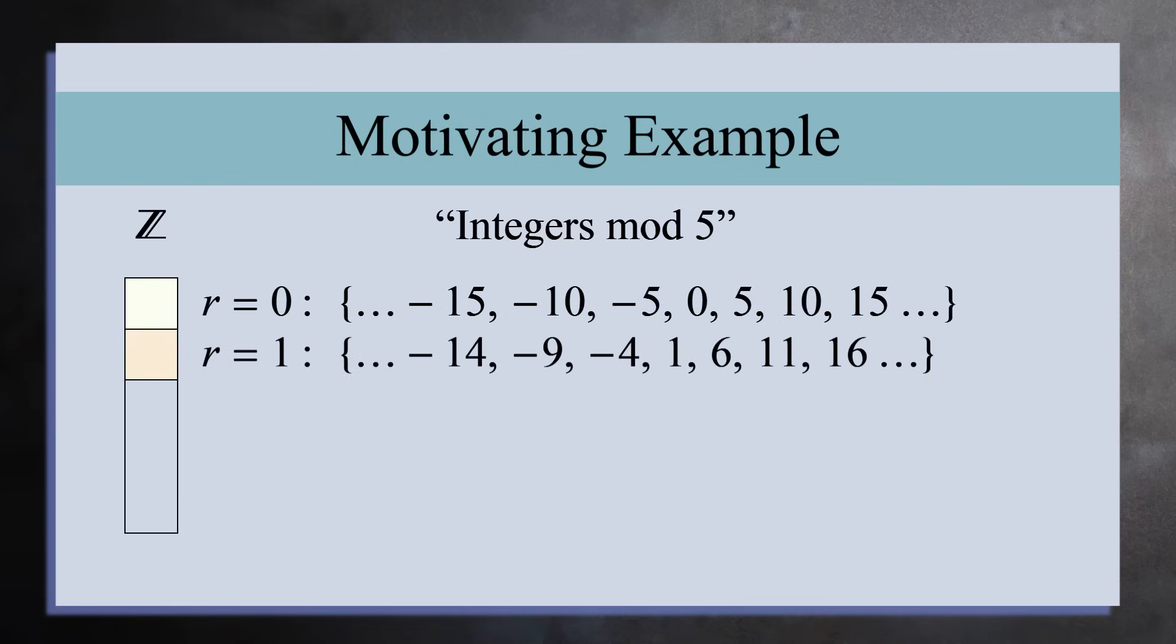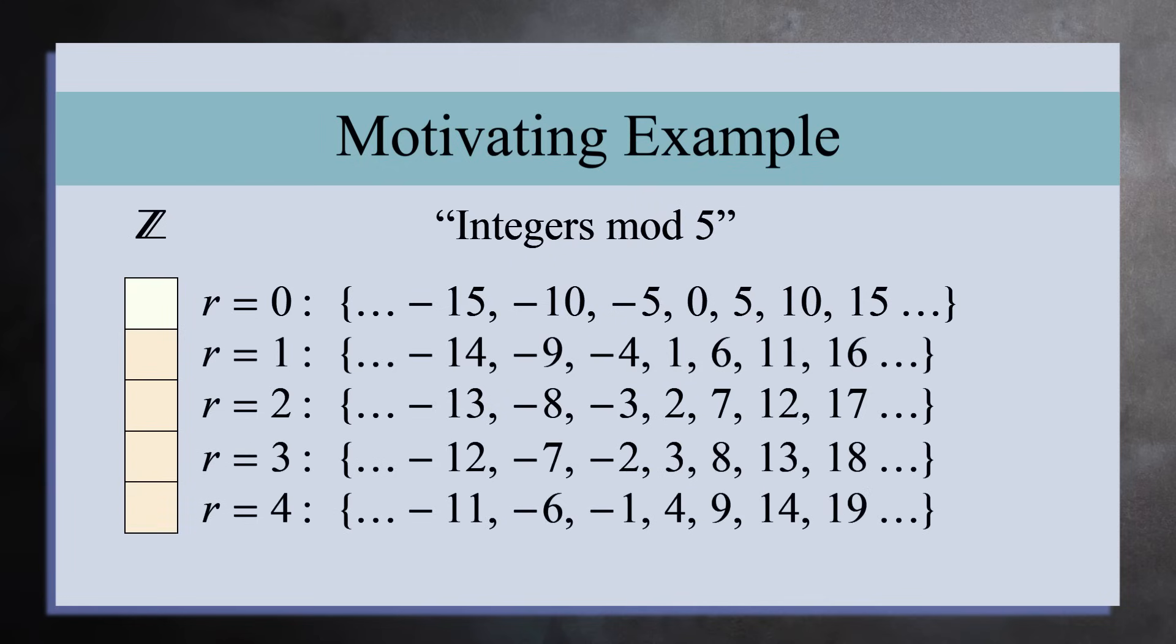The next set is the integers with a remainder of 1 when you divide by 5. We continue this process, those with the remainder of 2, 3, and 4. We can now stop, because these are the only possible remainders you can get.